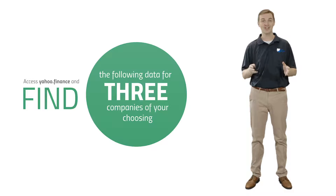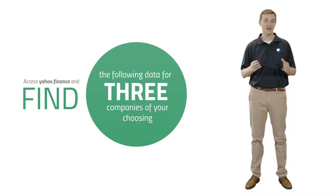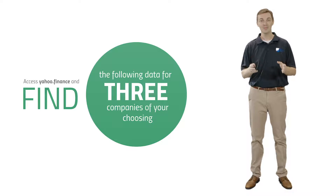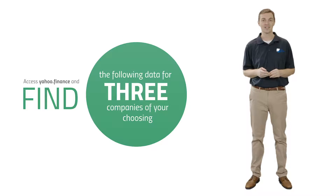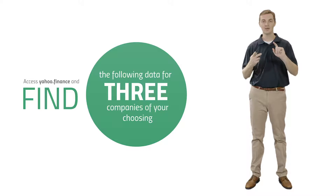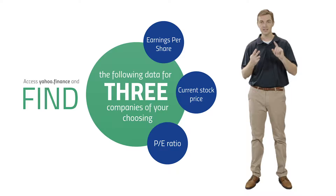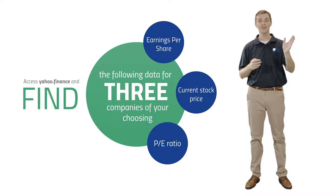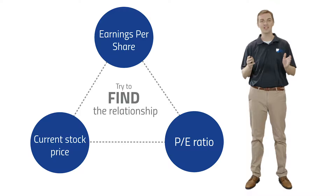I would challenge you to go to your financial news page — whether it's Yahoo Finance, Zaxx.com, Morningstar, or Guru Focus — and look up a company that you're interested in, maybe one you're looking at pitching for your YIS stock pitch competition. Find three variables: earnings per share, current stock price, and P/E ratio. Write them down and ask yourself: what is the relationship between these three variables?